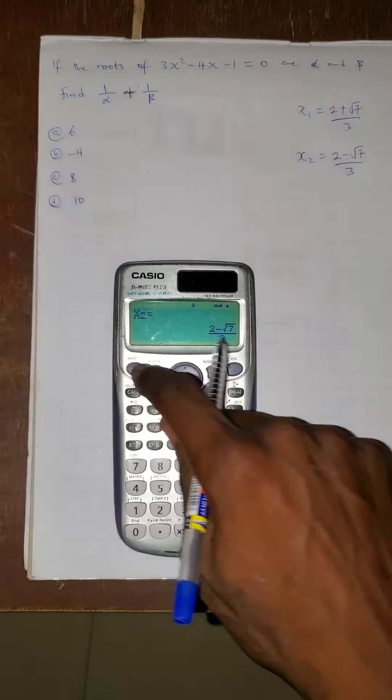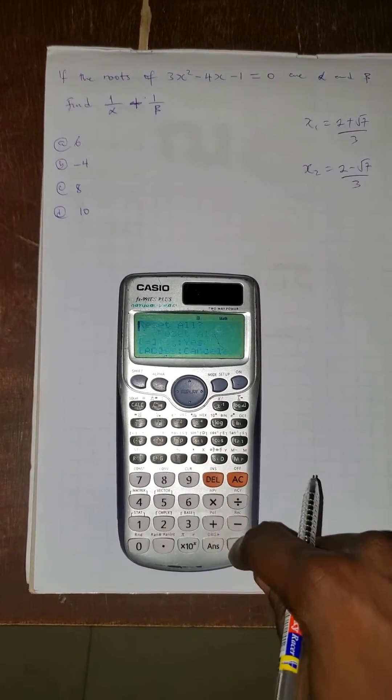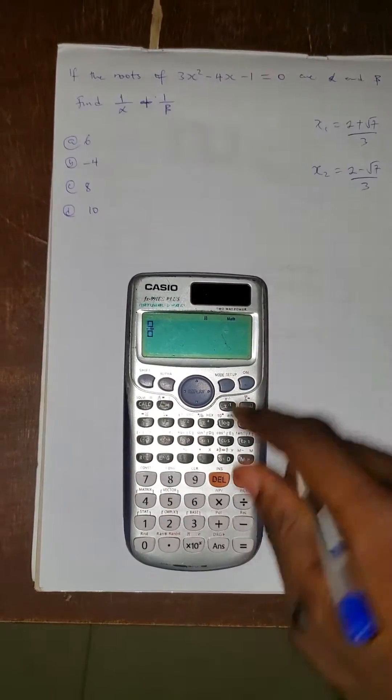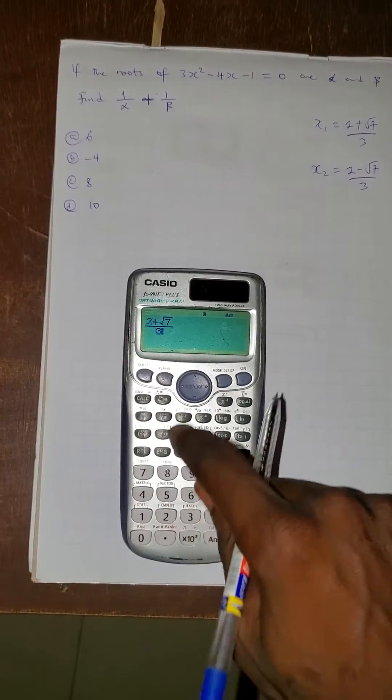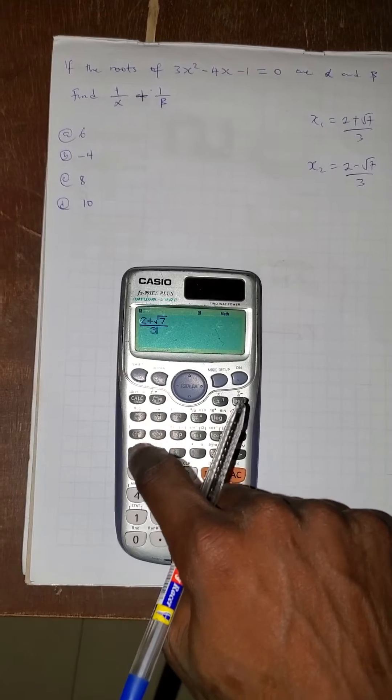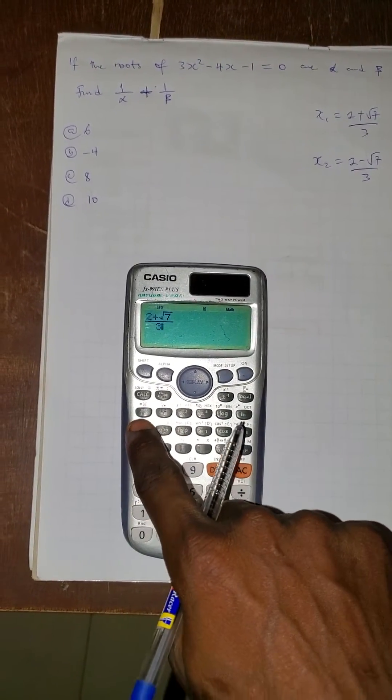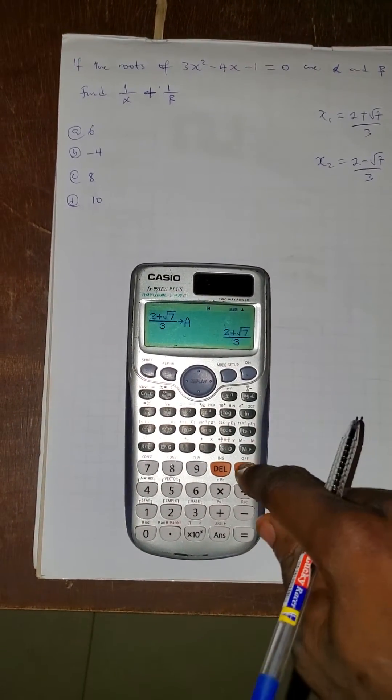Then after this, press reset your calculator. Now you have to press this one after the other. The first one, 2 plus root 7 over 3. Then press shift RCL, then press the button of A. You can see it's saved as A. Press AC.